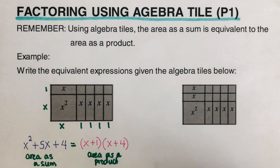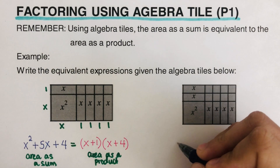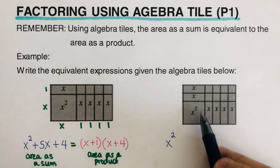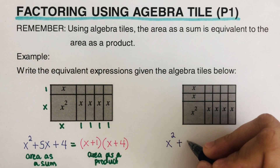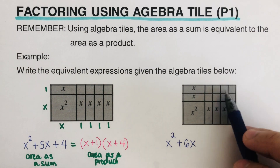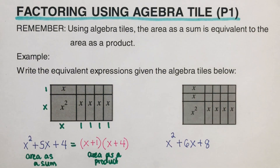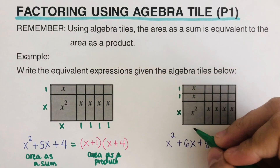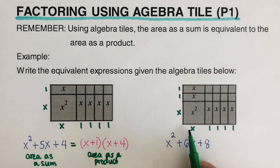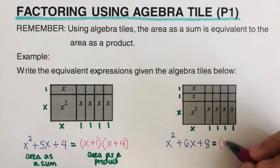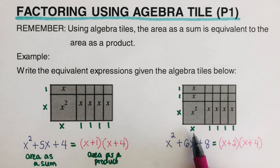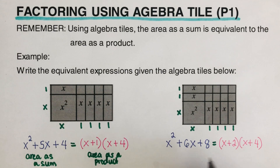Okay, let's go over this. The area as a sum: there is one x squared, then I count the x's — one, two, three, four, five, six — so that's plus six x, and then one, two, three, four, five, six, seven, eight ones, so plus eight. I label the parts: one, one, x; this is x, one, one, one, one. The length and width give the factored form: x plus two times x plus four. The general form is x squared plus six x plus eight; the factored form is (x+2)(x+4).